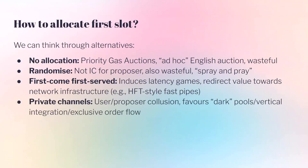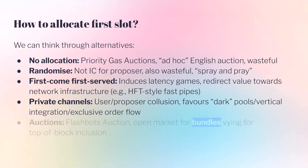Another way is private channels — simple user-proposer collusion. An arbitrager who knows the next block proposer can pay them to include their transaction in the first slot. This model favors dark pools where transactions are kept private, vertical integration between block extractors and proposers, or exclusive order flow. A generalization of this is an auction: as a block proposer who knows the first slot is valuable, just run an auction. Try to understand how much people will pay for that first slot — collect bids as bundles of transactions trying to get included at the top of the block. This was realized as the Flashbots auction.